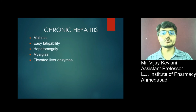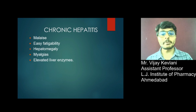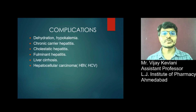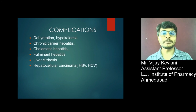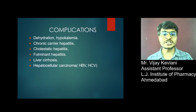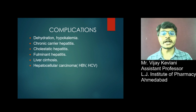Chronic hepatitis shows malaise, easy fatigability, hepatomegaly, myalgia, and elevated liver enzymes. Complications of viral hepatitis include dehydration, hypokalemia, chronic carrier hepatitis, cholestatic hepatitis, fulminant hepatitis, liver cirrhosis, and hepatocellular carcinoma.